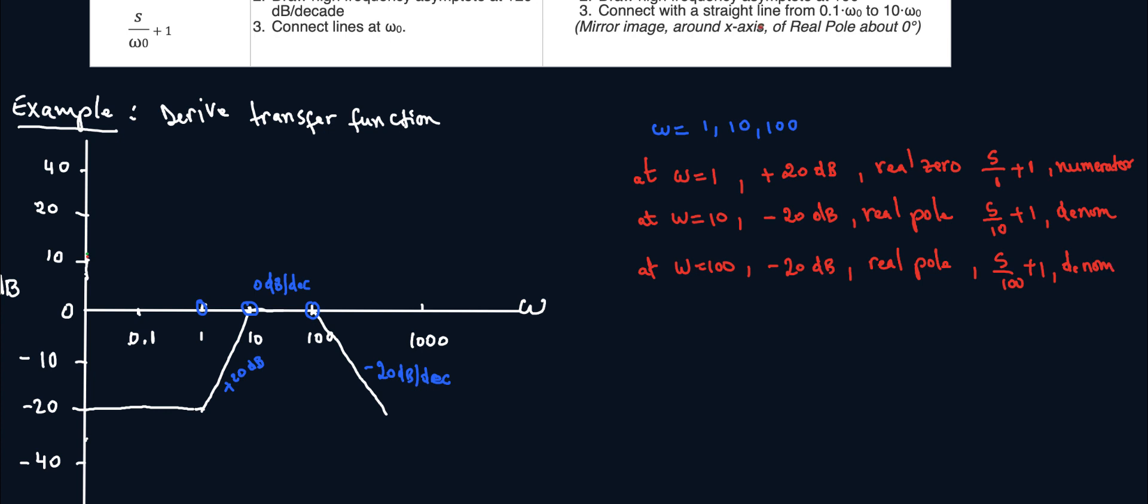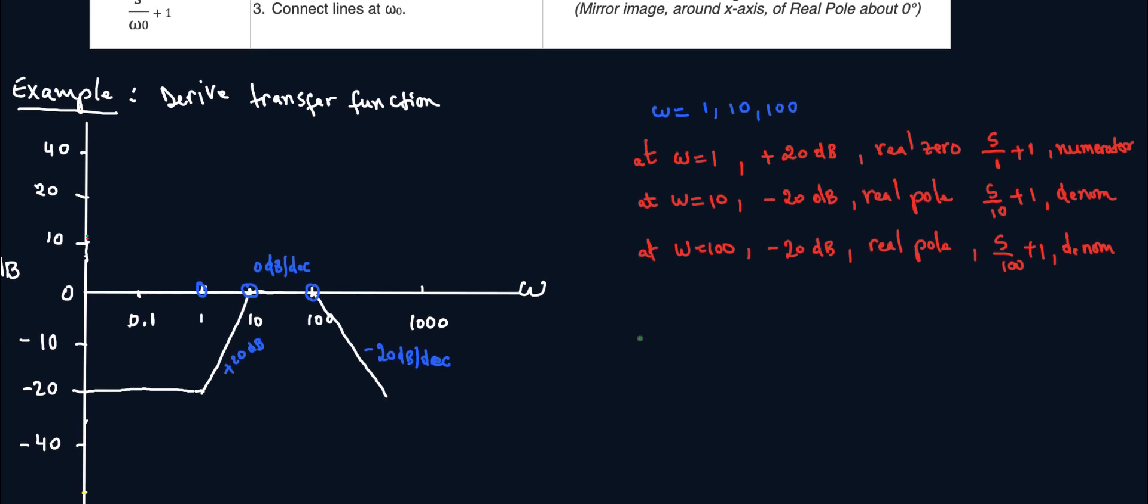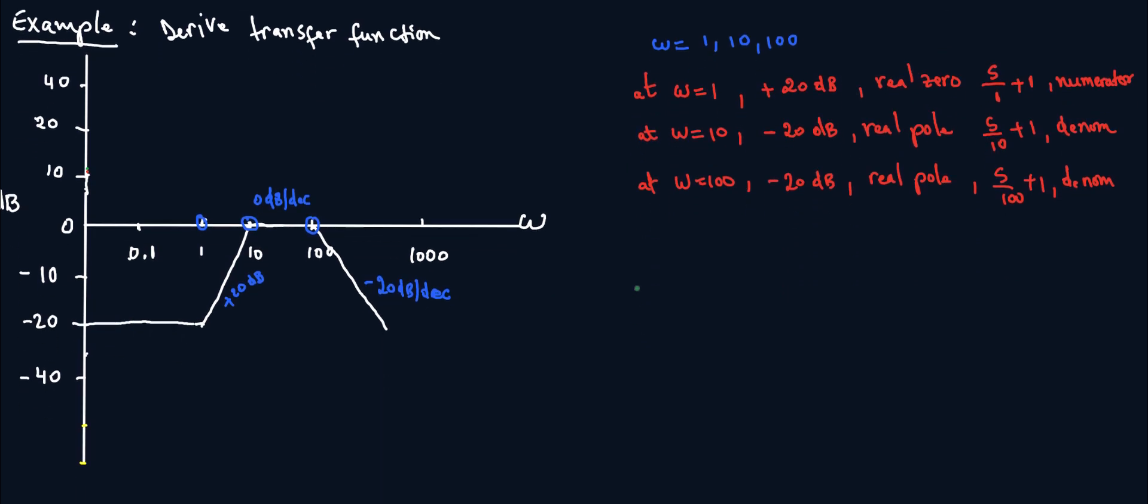So let's put all this together, my terms are done, I don't have any more frequencies here. So if I put all of this together, my transfer function is k, numerator so I have S plus 1, that's my real zero. And the denominator, I do have S over 10 plus 1, and then I have another pole, S over 100 plus 1.